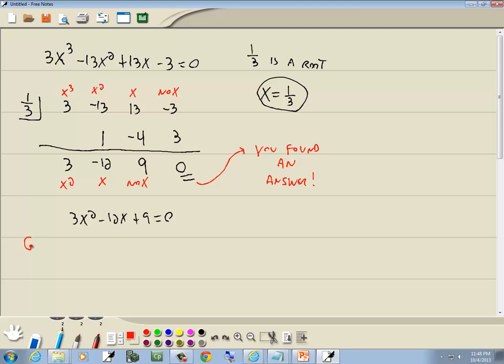Well, I noticed right away they have a GCF in common. They're all divisible by 3. So I'll factor that out. And that gives us x squared minus 4x plus 3 equal to 0.